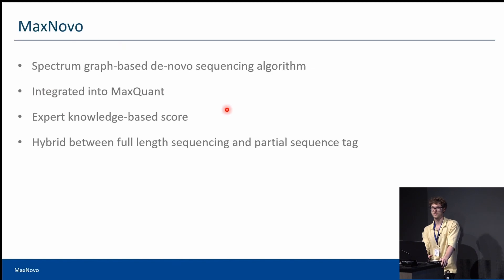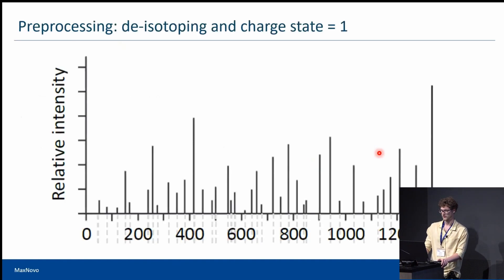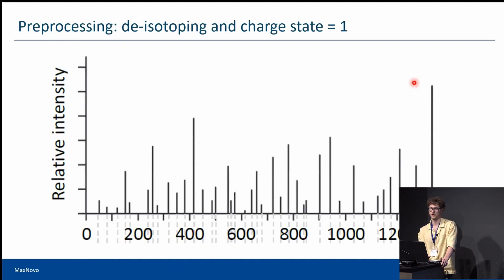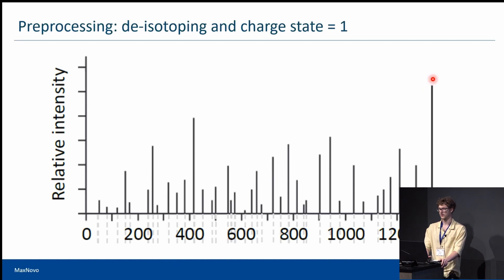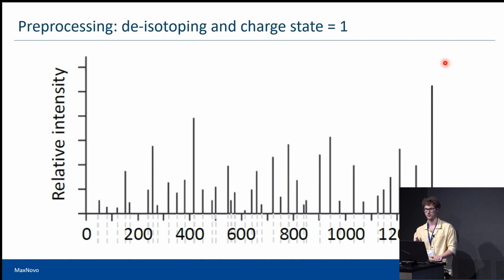This algorithm is hybrid and can sequence both full-length sequences and partial sequences. The first step of de novo is the same as for library search. We detect isotope patterns in the scan and move our monoisotopic peaks to charge state one, because you can retrieve a charge from the isotope pattern.